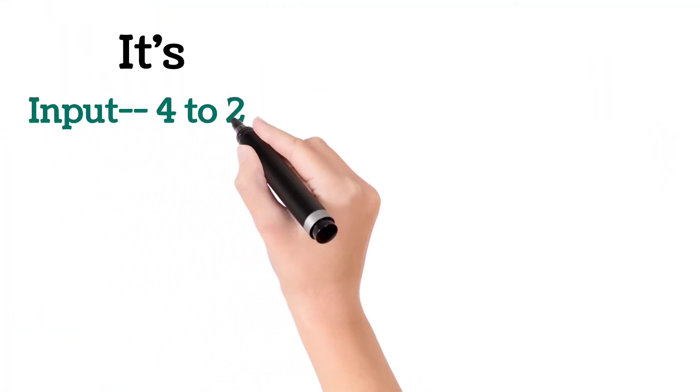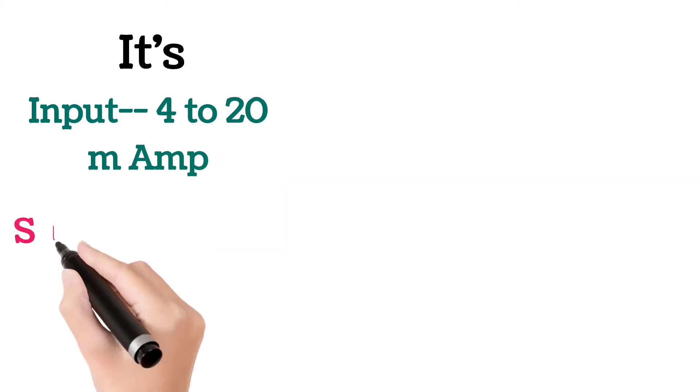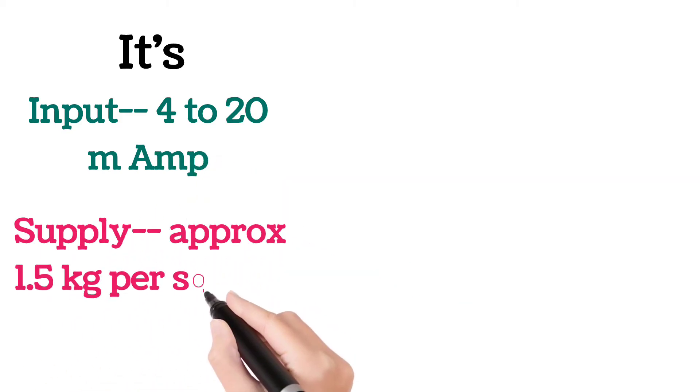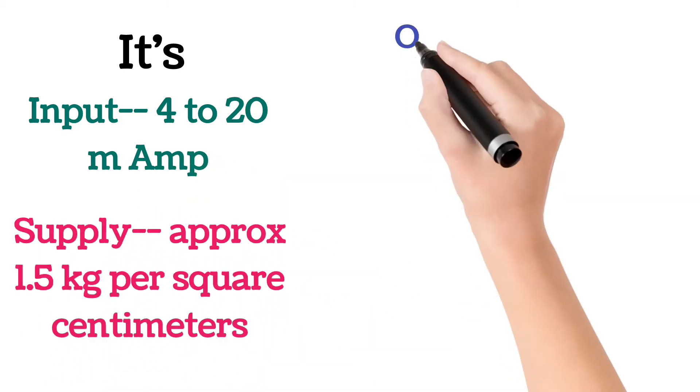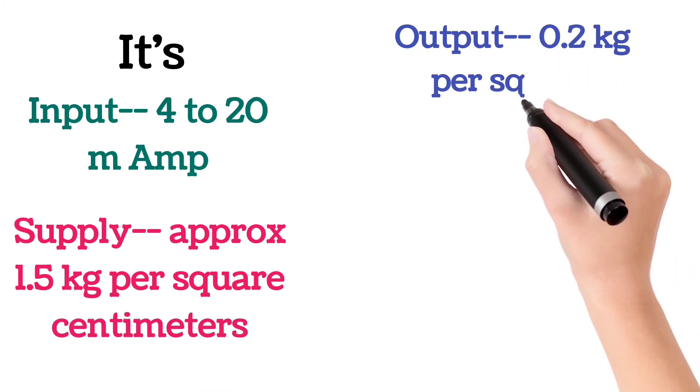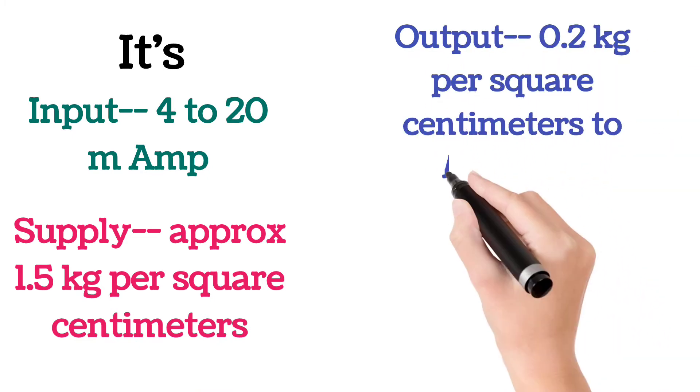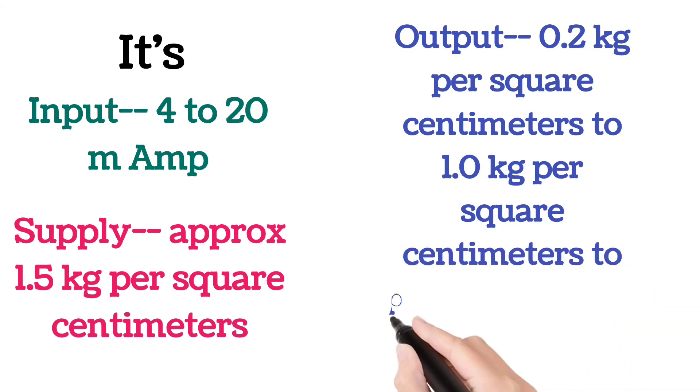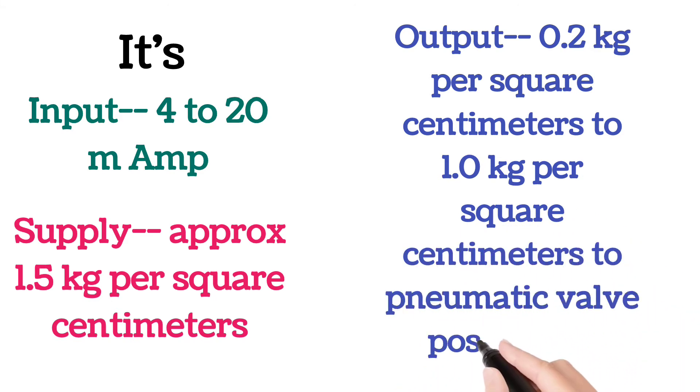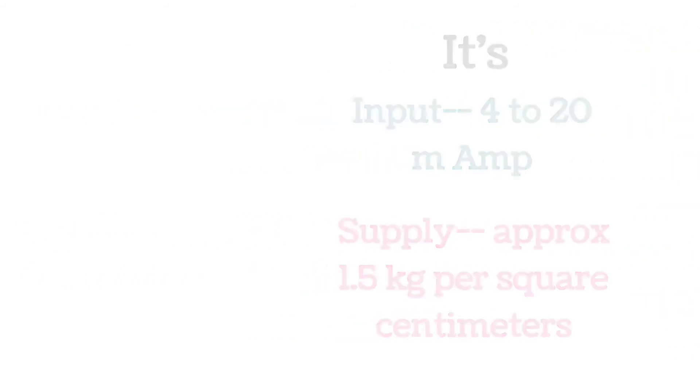I to P converter input is 4 to 20 milliamps. Its supply is approximately 1.5 kg per square centimeter. And its output is 0.2 kg per square centimeter to 1.0 kg per square centimeter and is provided to pneumatic valve positioner.